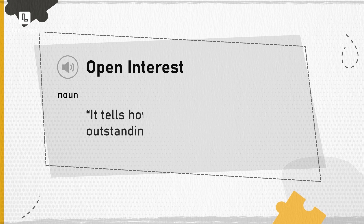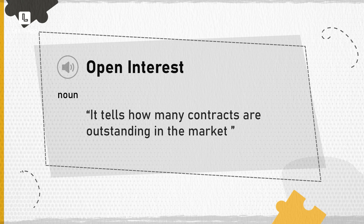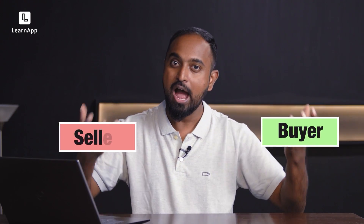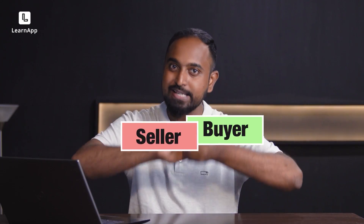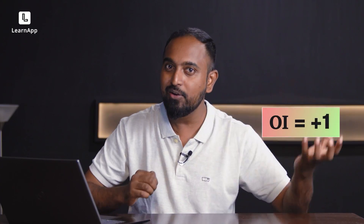Open interest is a simple number which tells how many outstanding contracts are there in the market, be it futures or options. Every trade has two sides — a buyer and a seller. And when a buyer and seller agree upon a price, that's when a single open interest is built.